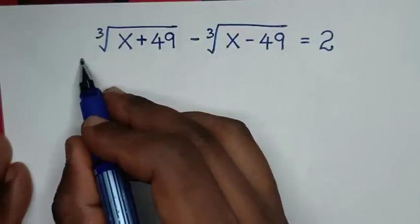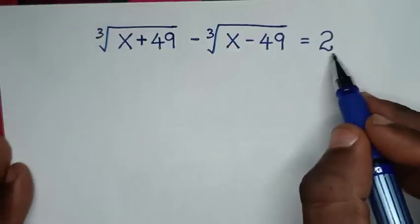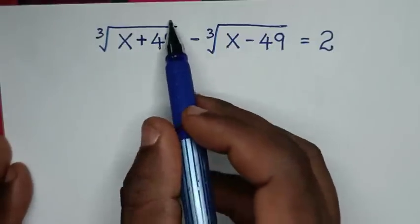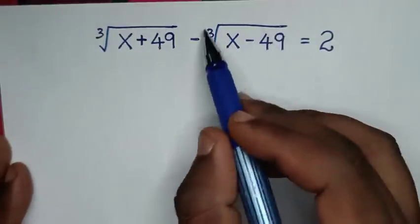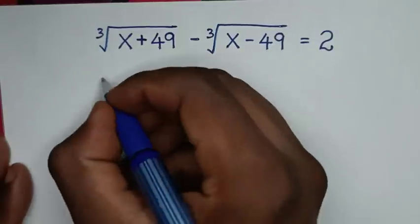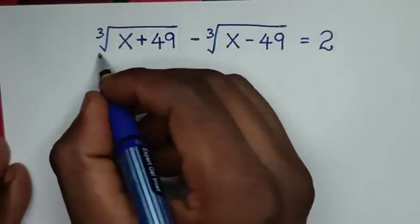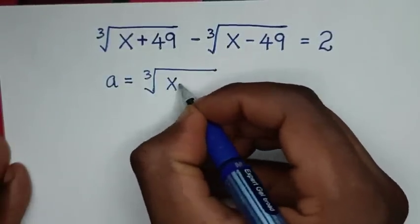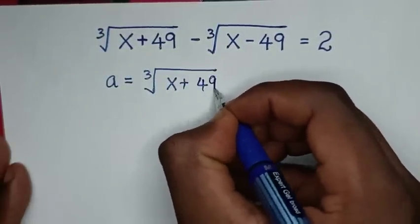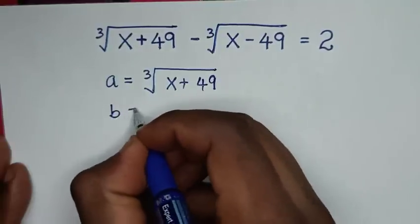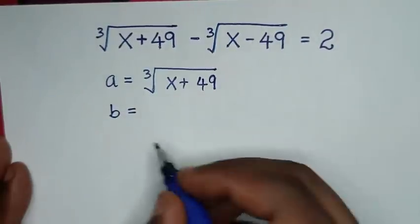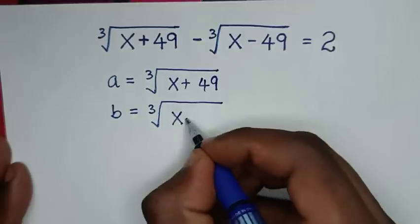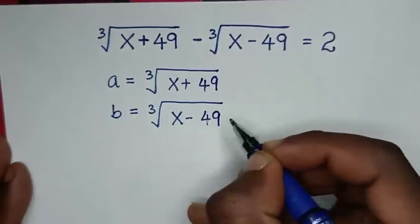To find the values of x from this equation, in the first step we will start by letting a equal to cube root of (x plus 49), and b equal to cube root of (x minus 49).